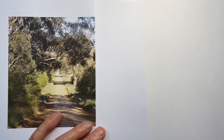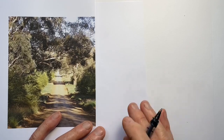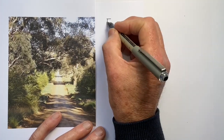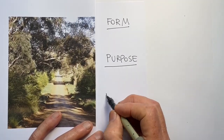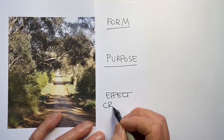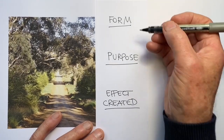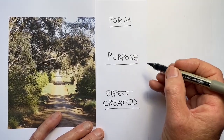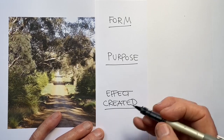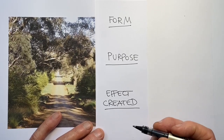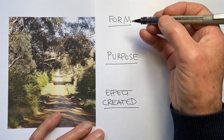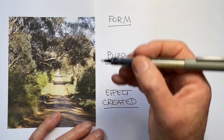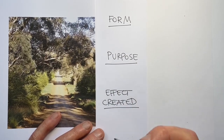I have three broad categories of thinking about the marks I make: the form of the marks, the purpose of the marks, and the effect that I'm wanting to create through the marks. And I have three main things in each of these that I'm thinking of.